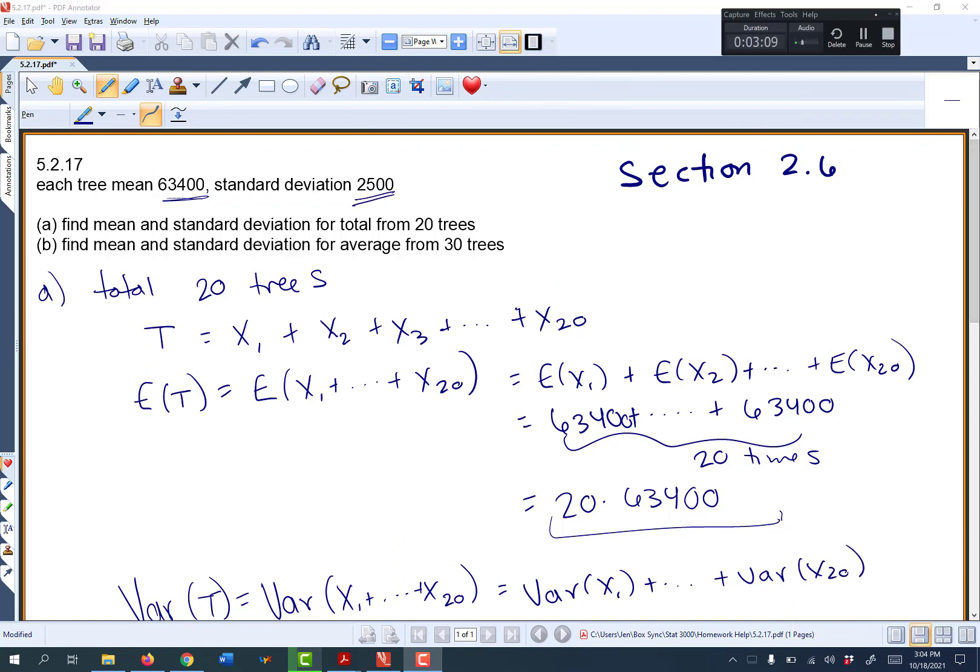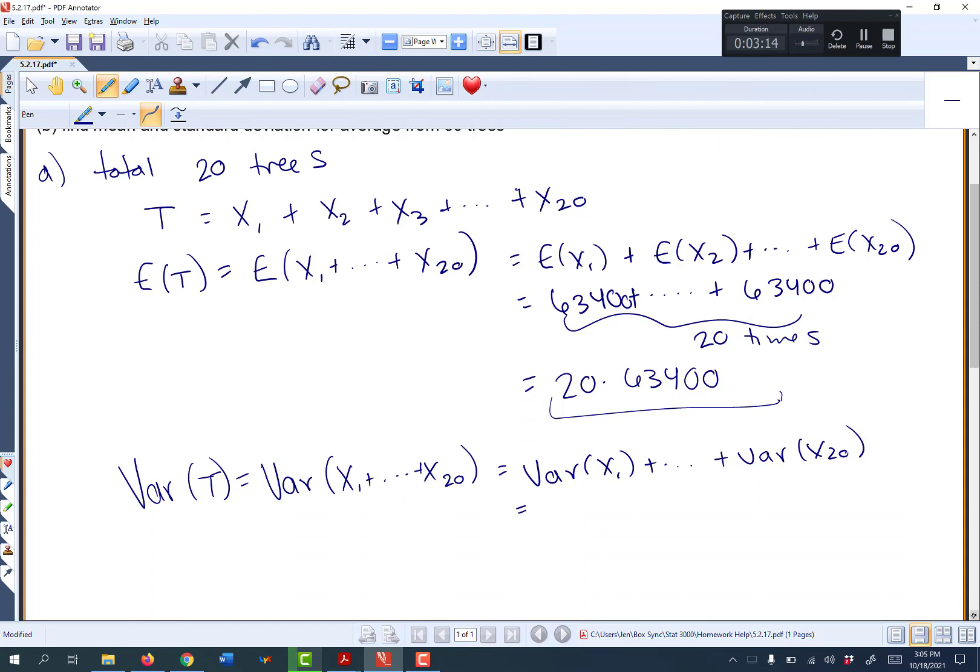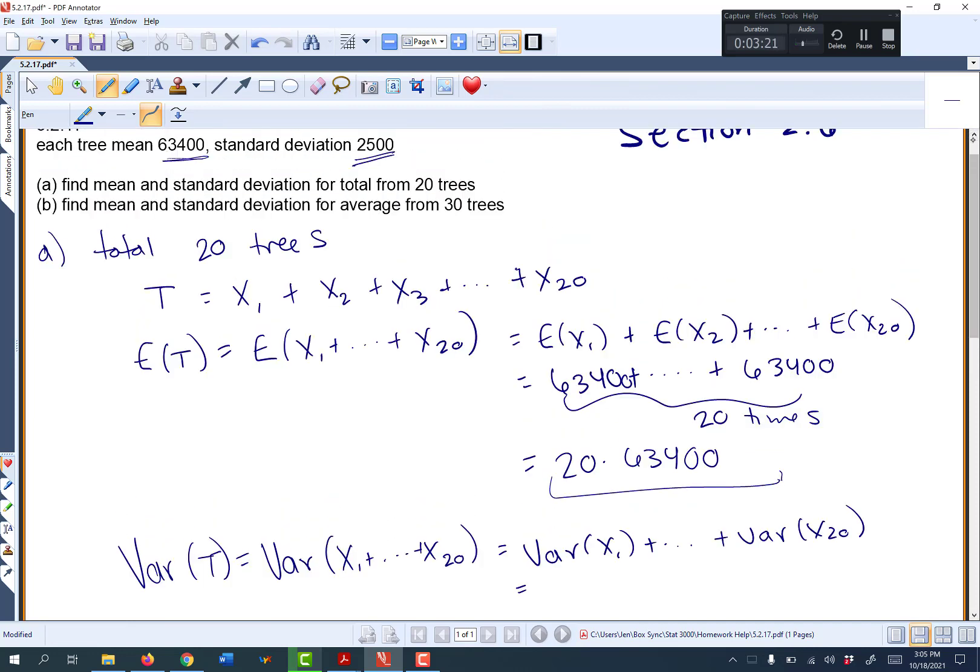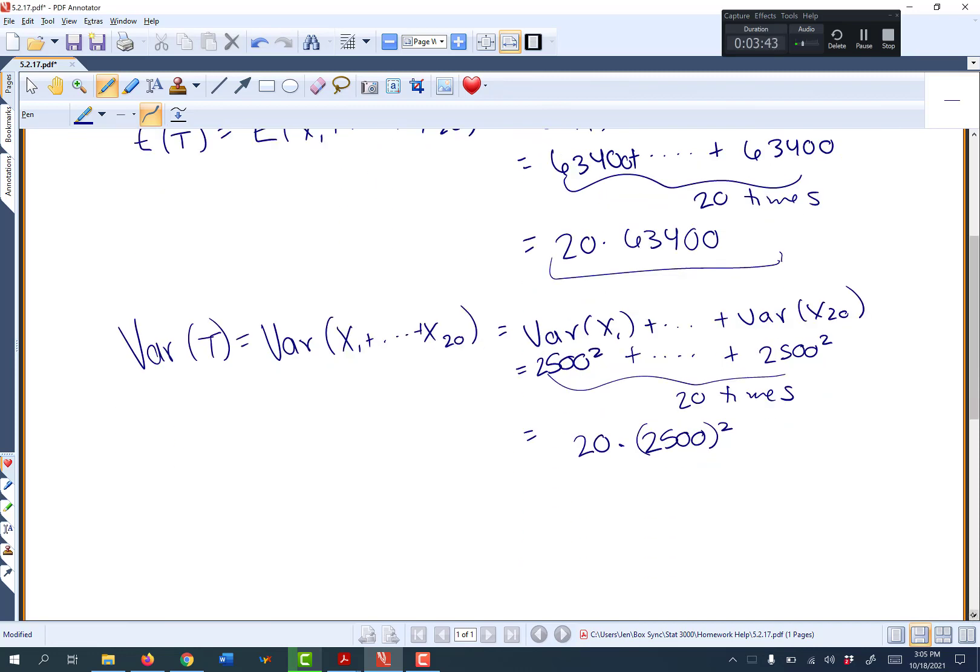So the standard deviations are 2,500. And it might seem like it'd be easier since I'm having to do this extra step to just have rules that work with standard deviation, but the rules don't work with standard deviation. They only work for variance. So we'll do 2,500 squared for the first one plus dot dot dot plus 2,500 squared for the last one. And we're going to add that up 20 times, which is going to give me 20 times 2,500 squared.